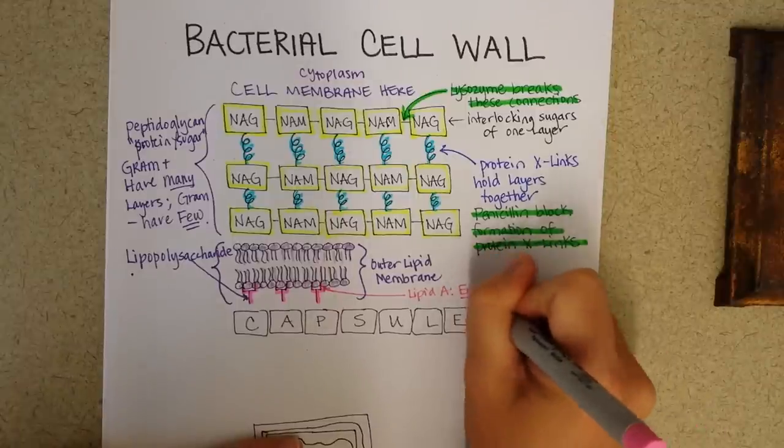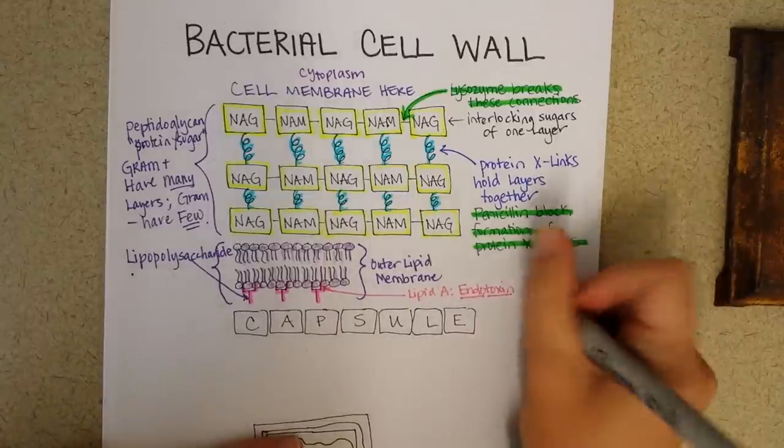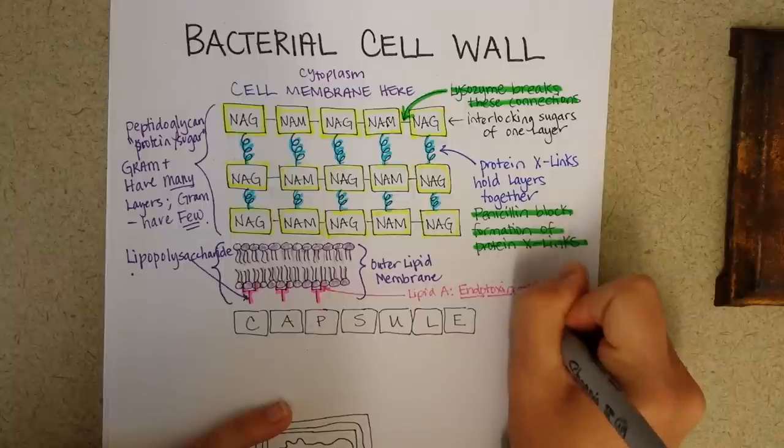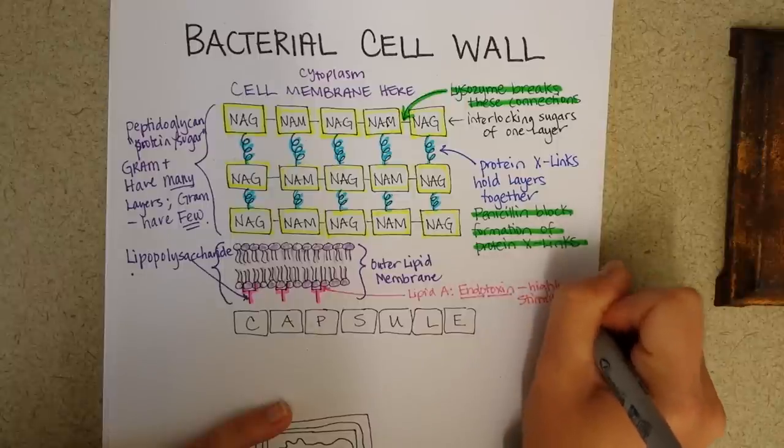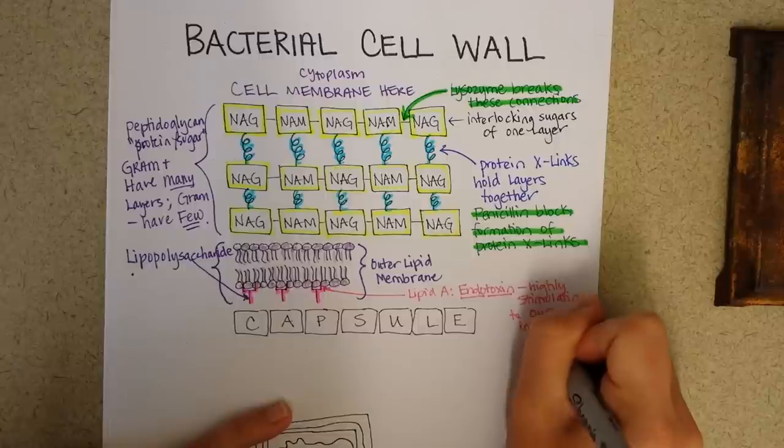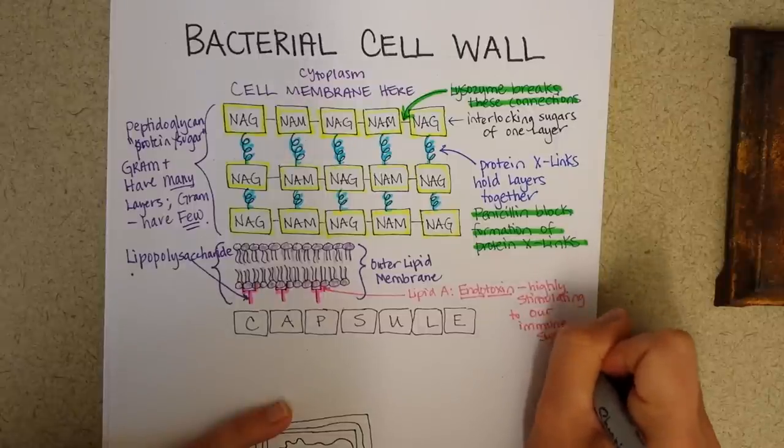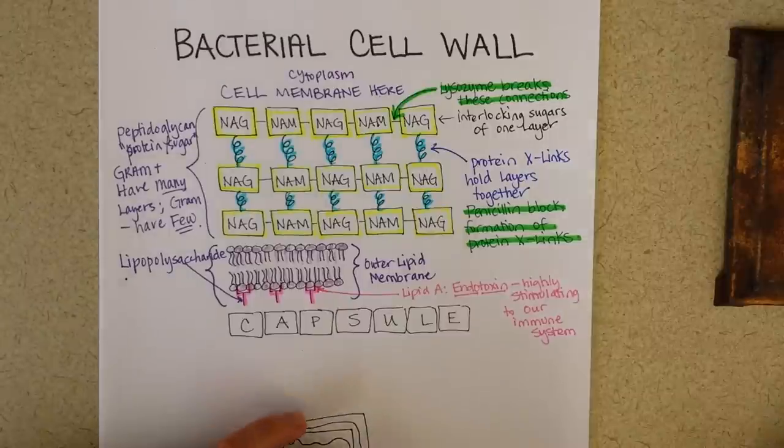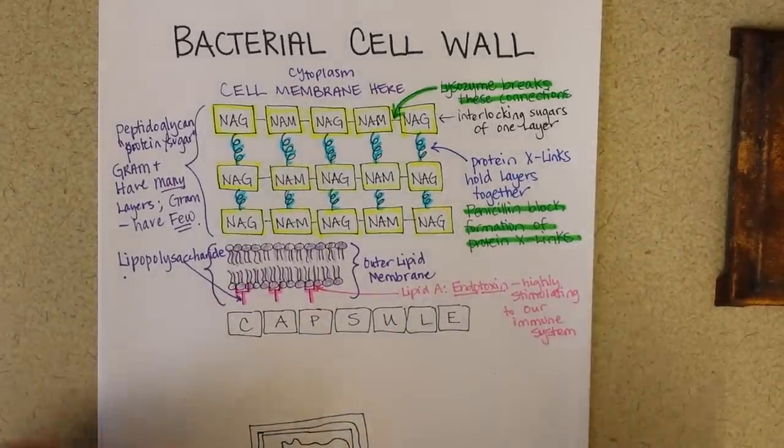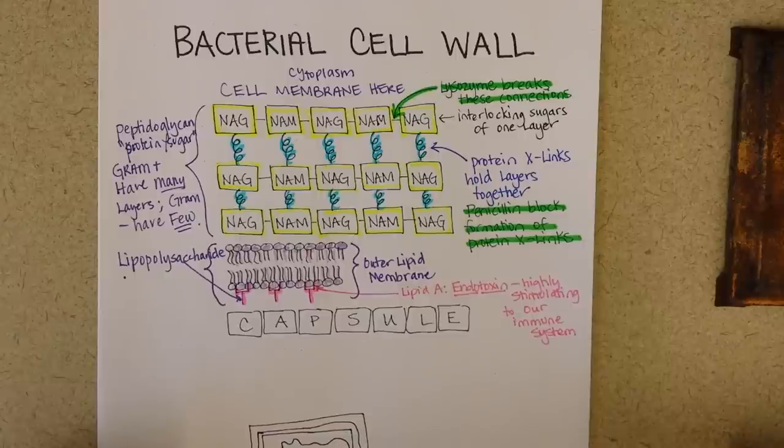So that's the endo part. And we call it a toxin because it's highly stimulating to our immune system. And that can be good within measure, but it can be bad if it's over stimulating to our immune system. And then an endotoxin could actually cause someone to go into septic shock.